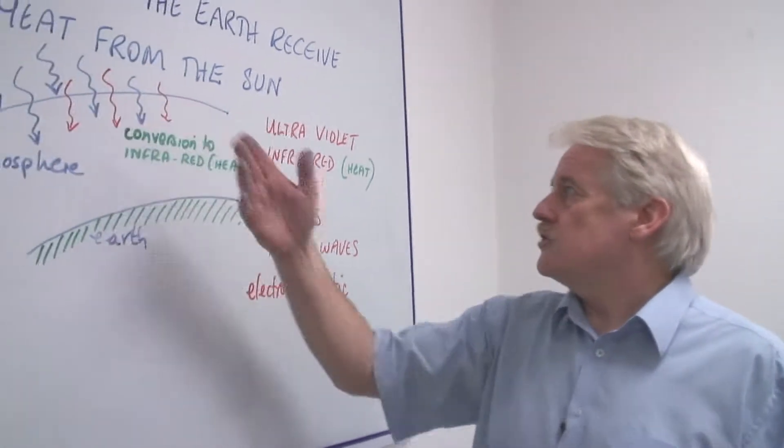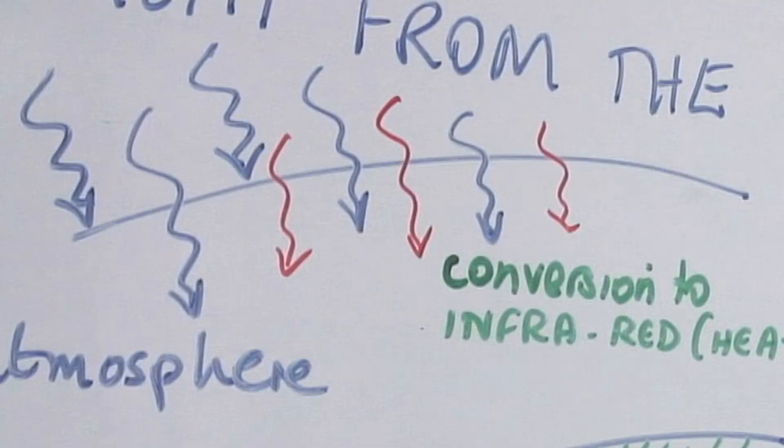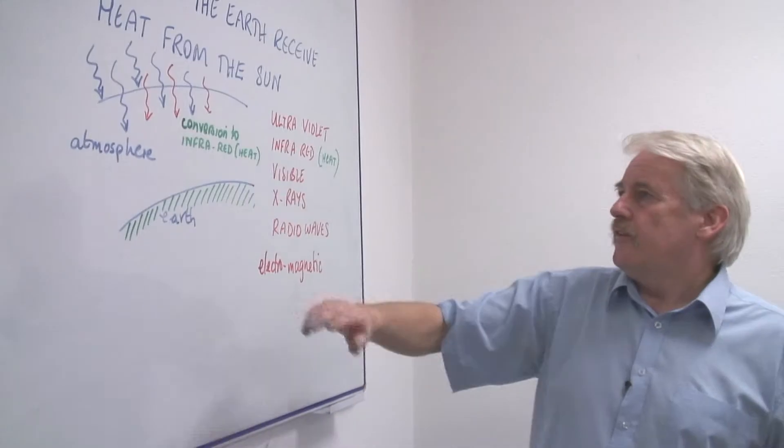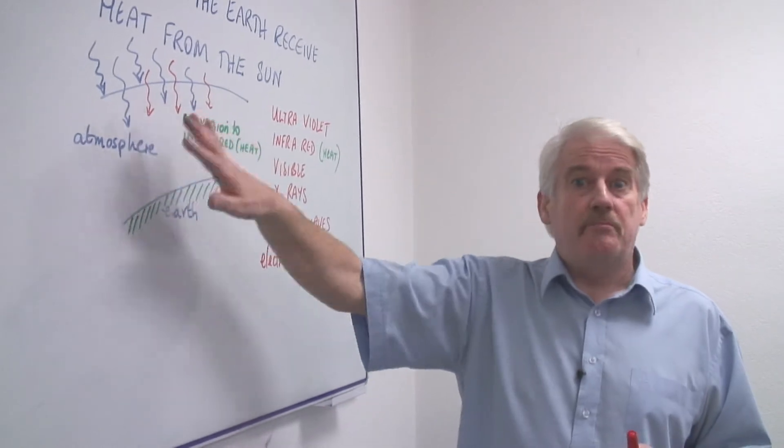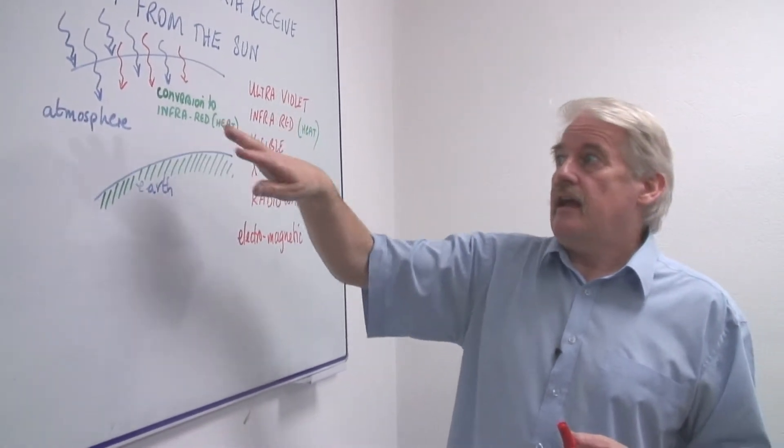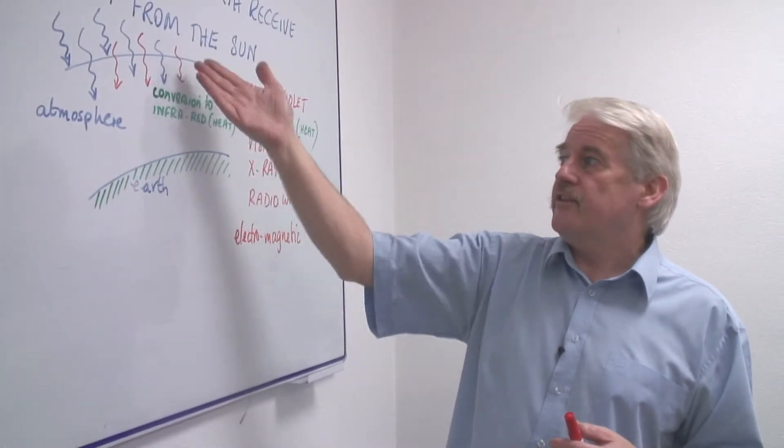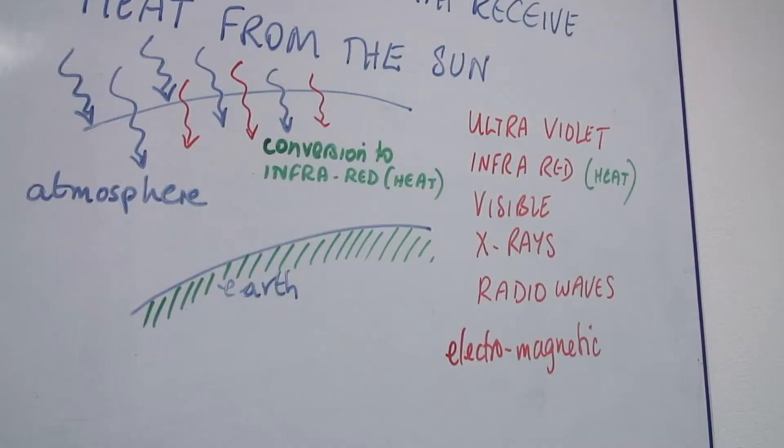Now as these radiations impinge on the atmosphere above the earth, they can be absorbed by the atmosphere. And having absorbed in the atmosphere then emits radiation as infrared.